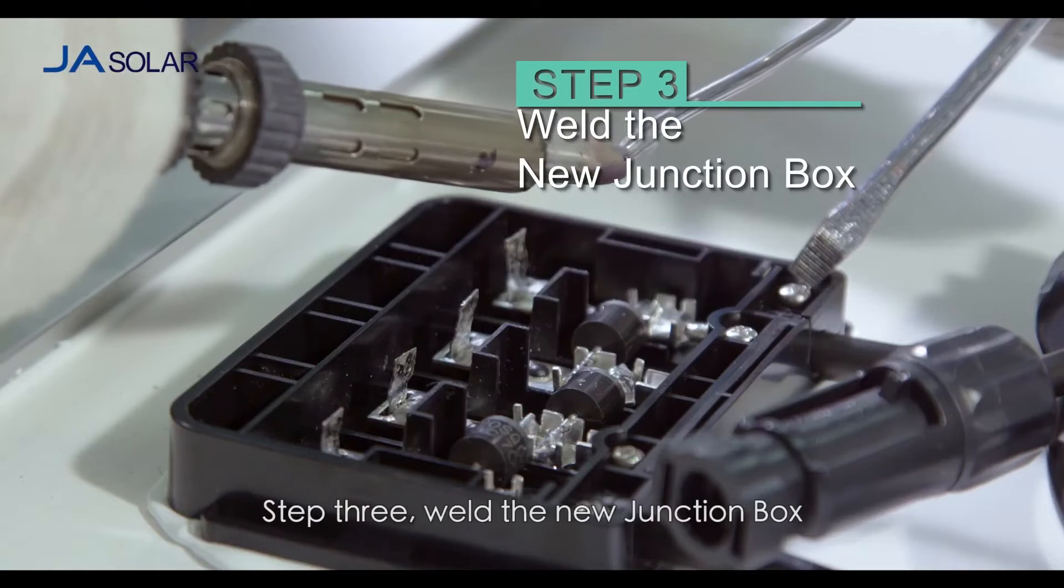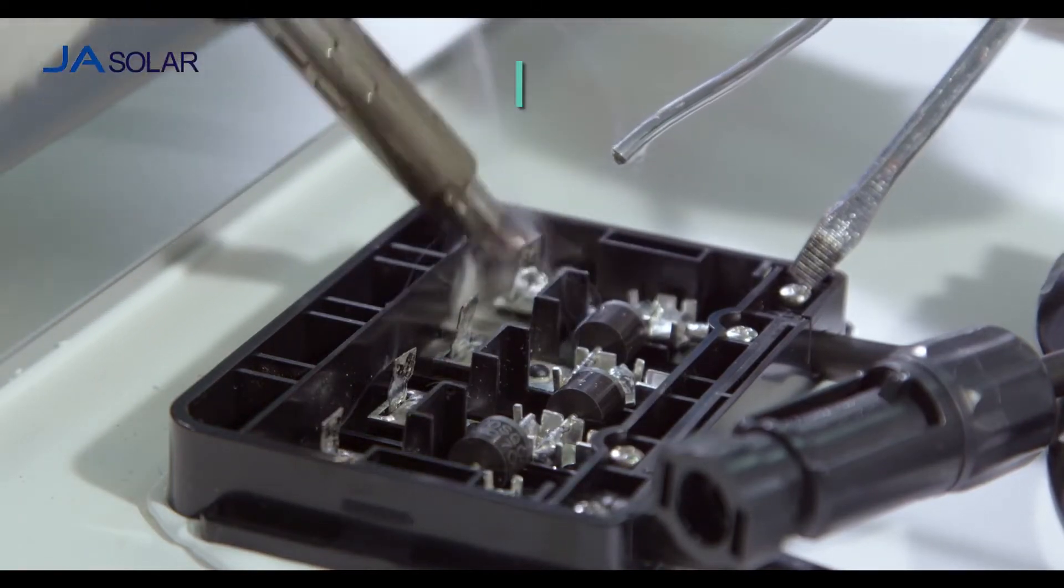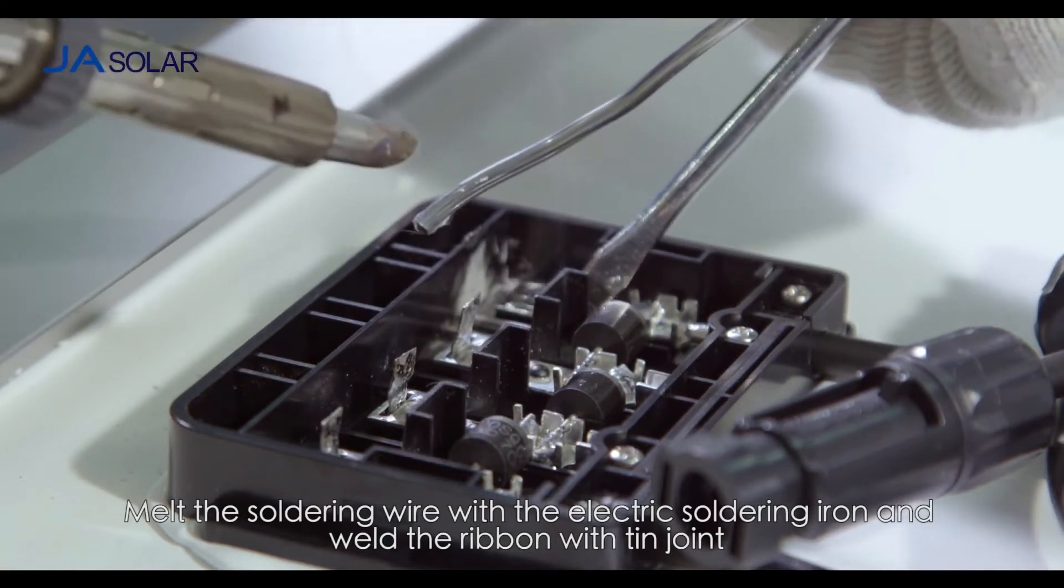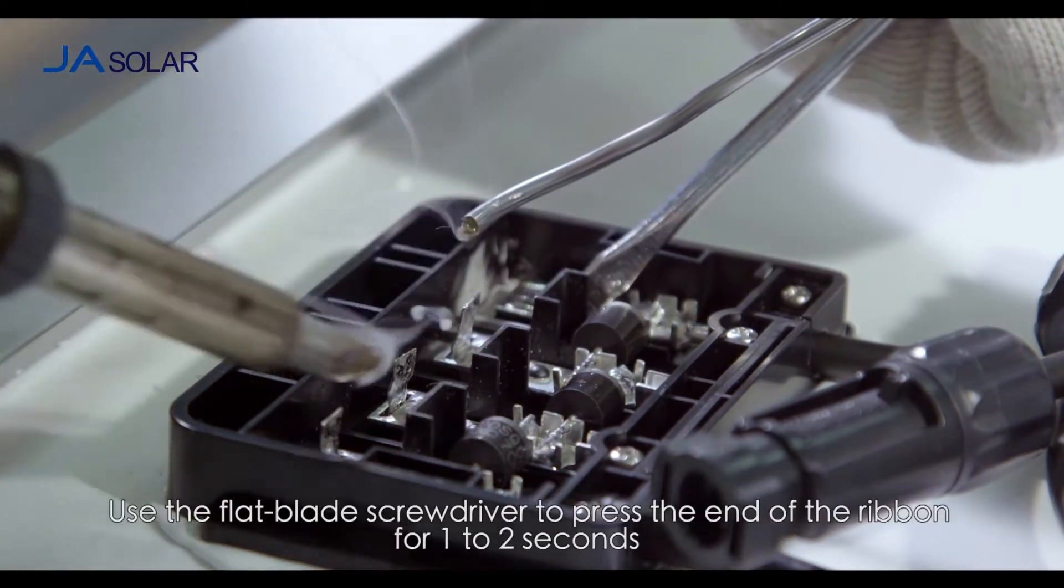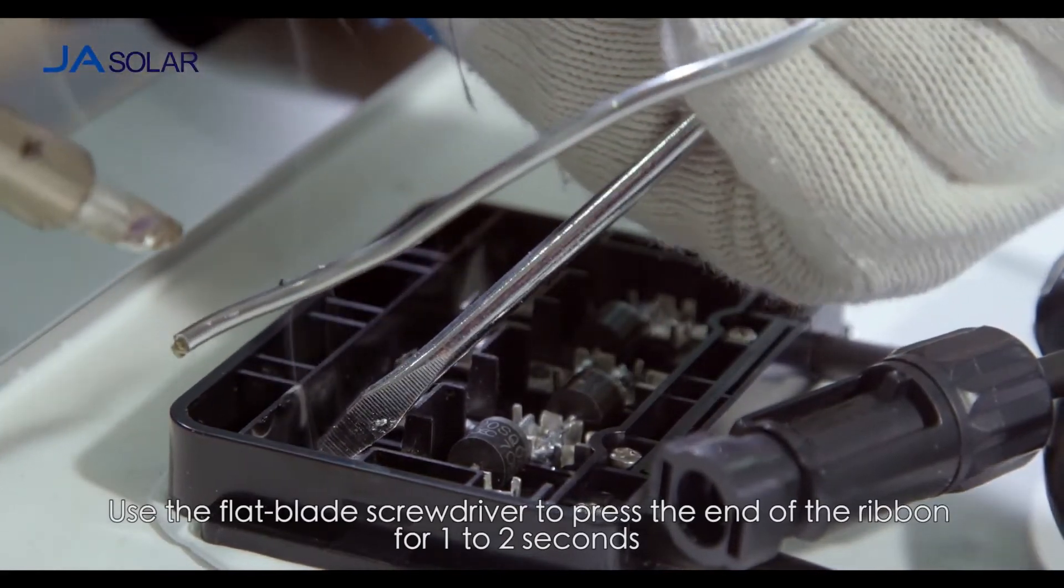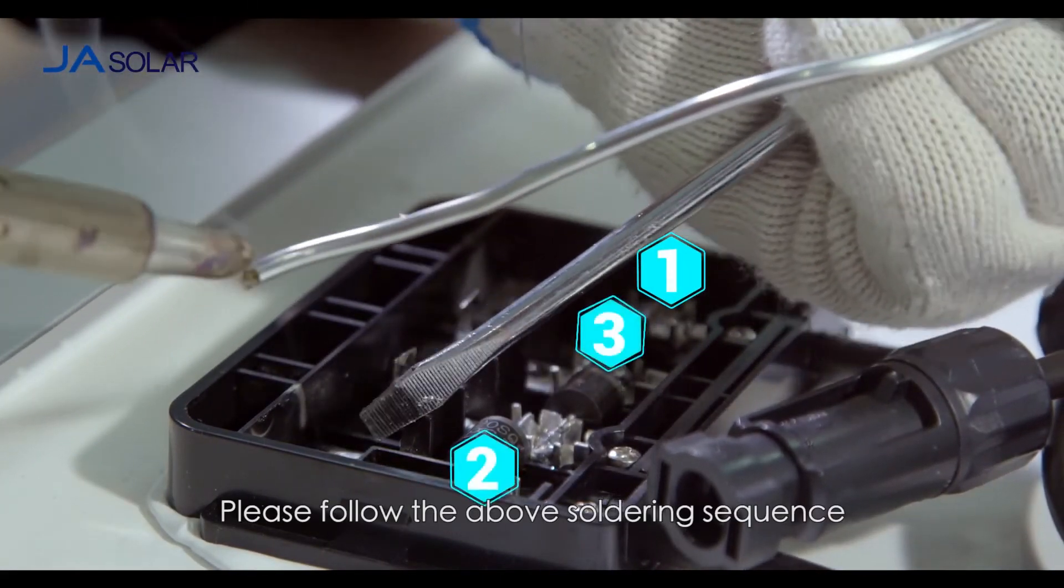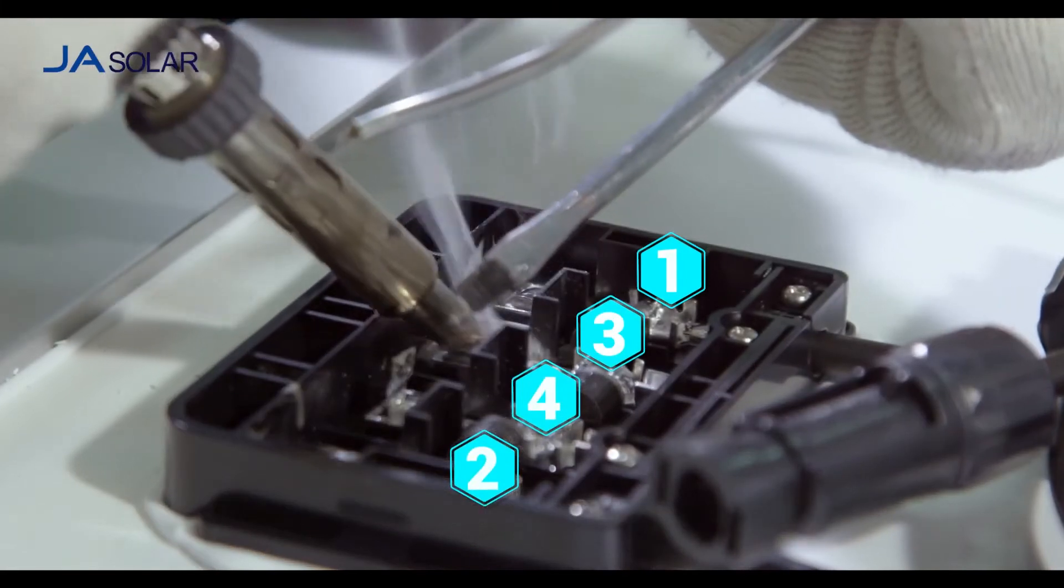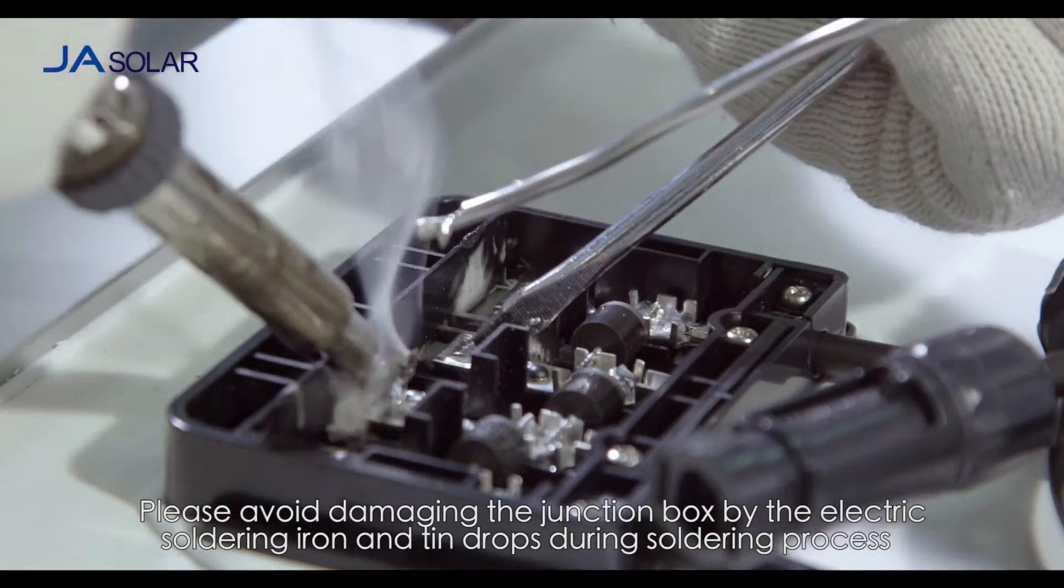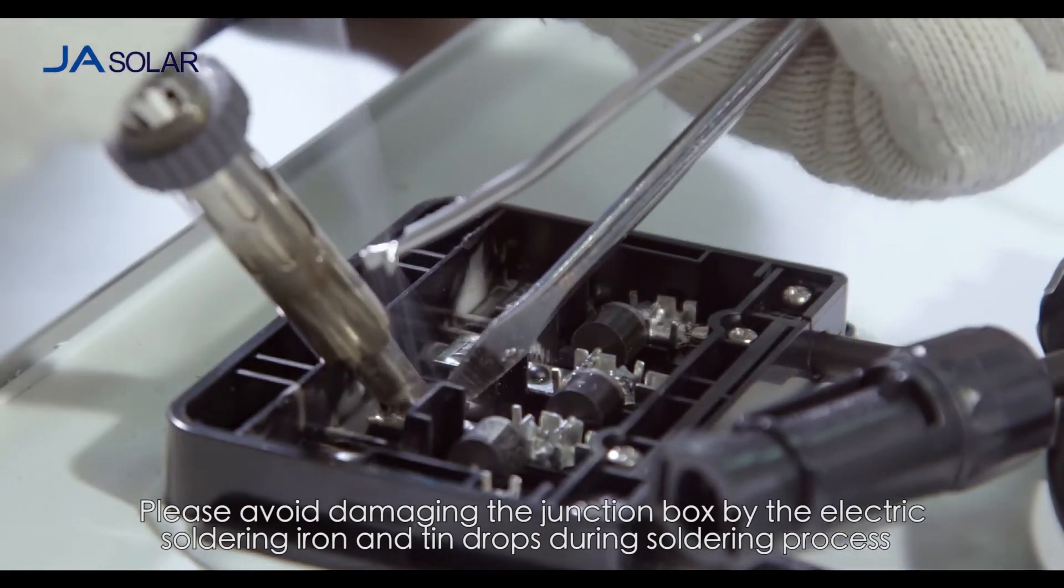Step 3: Weld the new junction box. Melt the soldering wire with the electric soldering iron and weld the ribbon with tin joint. Use the flat blade screwdriver to press the end of the ribbon for 1 to 2 seconds. Please follow the above soldering sequence. Please avoid damaging the junction box by the electric soldering iron and tin drops during soldering process.